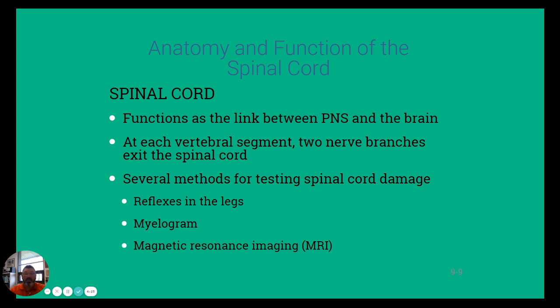The spinal cord is the link between the peripheral nervous system and the brain. It's very important that we keep it in good shape. It attaches at each vertebral segment, with two nerve branches exiting the spinal cord out into your extremities. There are different methods for testing when an animal may have spinal cord damage — you can test reflexes, do a myelogram, or an MRI to test for nervous system damage.